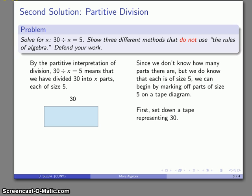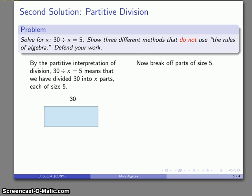So I'll go ahead and set down a tape that represents my 30, and I'll start setting down parts of size 5. So I'll break off sides of size 5. So here's going to be break off 1, and put down a second, and a third. Let's check. That's 5, 10, 15. Let's keep going. 20, 25, and 30. And there's all of our parts of size 5.